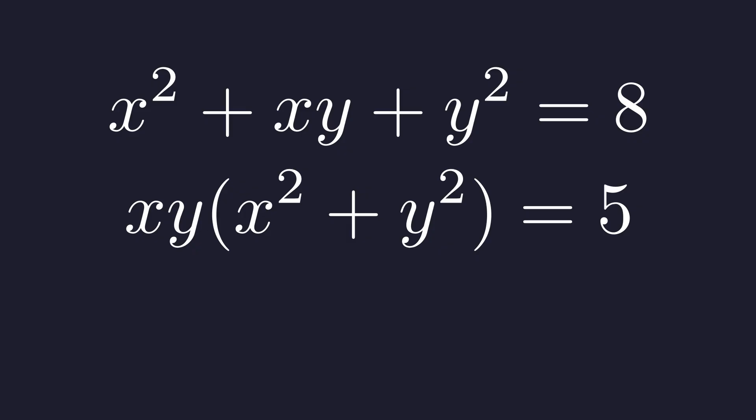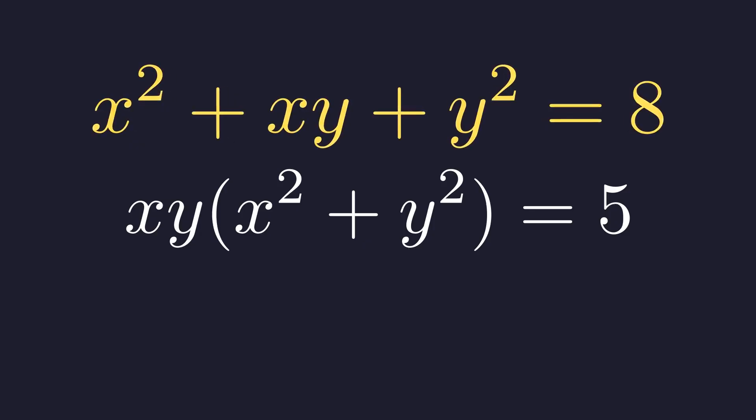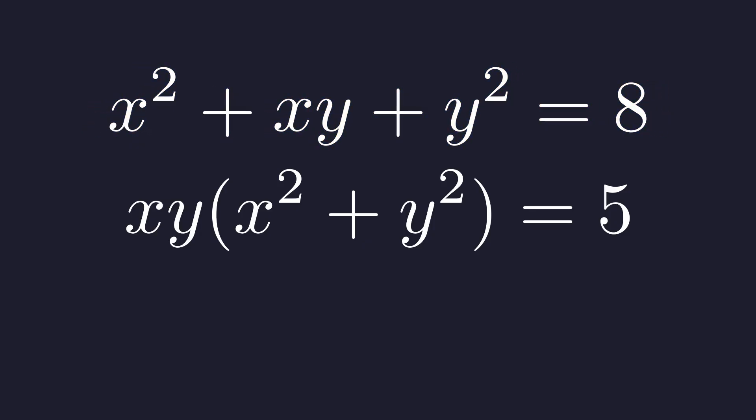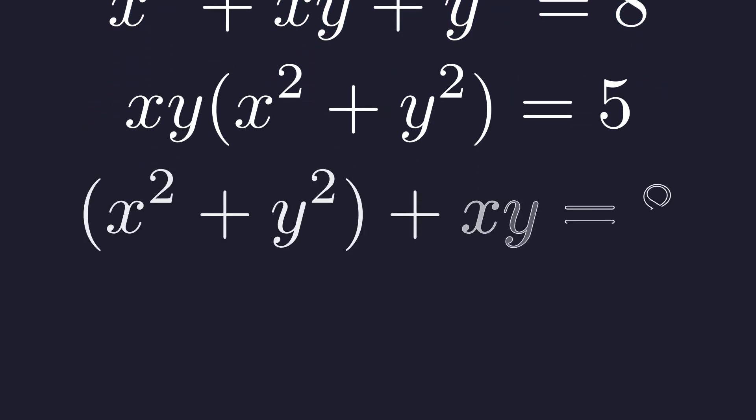x squared plus y squared. And xy. Let's rearrange the first equation to highlight this structure. We'll group the x squared and y squared together.